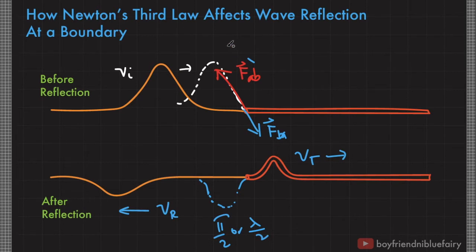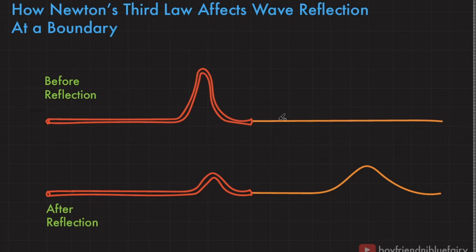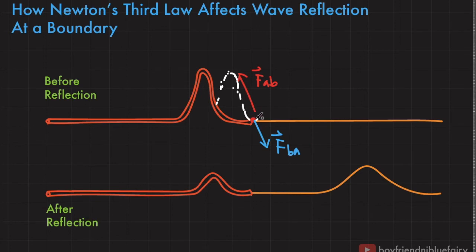Let's examine another case where we reverse the properties of the medium. What if the incident wave comes from a medium with higher linear mass density and is about to travel across a medium with lower linear mass density? I'll call this the heavier string and this one the lighter string. Before reflection, when it reaches this point, the heavier string exerts a force F sub AB, and by Newton's third law, the lighter string exerts an equal but opposite force F sub BA. Since this is a heavier string, it has greater inertia, so even with F sub BA acting at this point, the acceleration of the heavier string is greater than the acceleration due to the reaction force from the lighter string. In other words, it does not reverse the phase of the reflected wave.